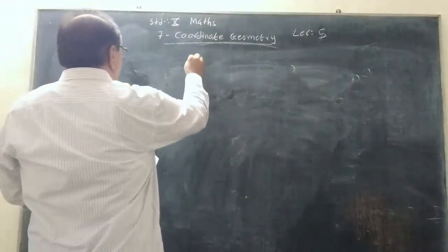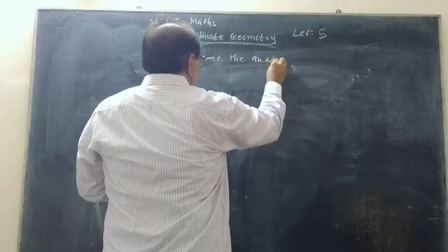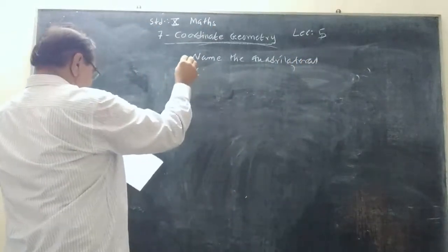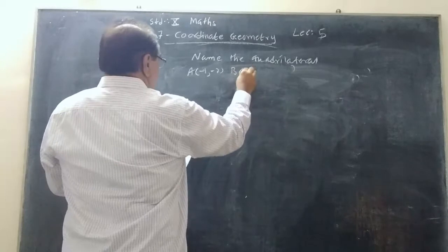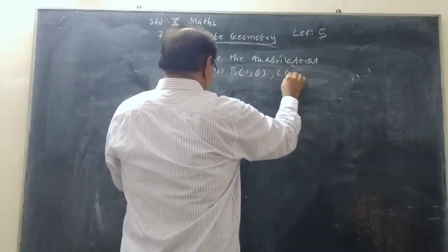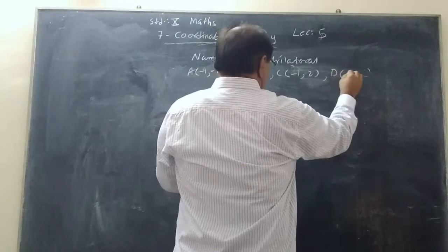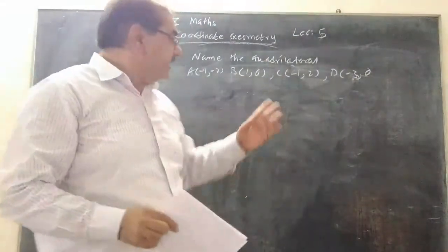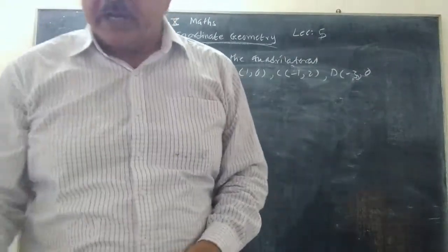You have to name the quadrilateral. You are given 4 vertices: A is (-1, -2), B is (1, 0), C is (-1, 2) and D is (-3, 0). So these are the 4 vertices A, B, C, D and we want to find out what kind of quadrilateral it is.